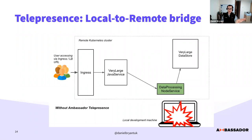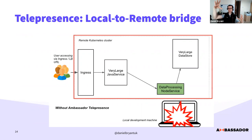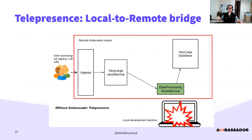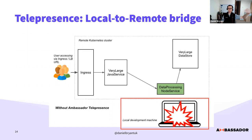Here's the app I'm going to demo. It's super simple: an Ingress calling into a very large Java service — think of it as a big monolithic Spring app — which then calls out to a data processing Node service, which in turn calls into a very large old data store. Imagine you can't run these three services on your laptop. You want to work on the data processing Node service, but to test it, you want to call it via the Ingress as a user would, and it needs to call out to the very large data store.